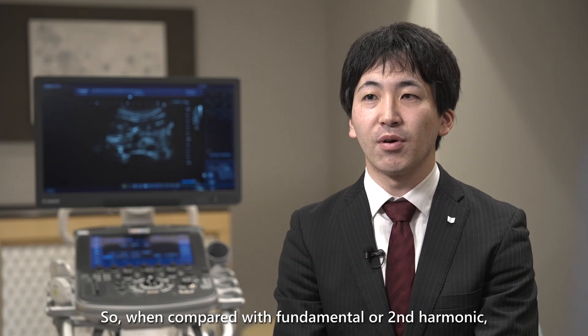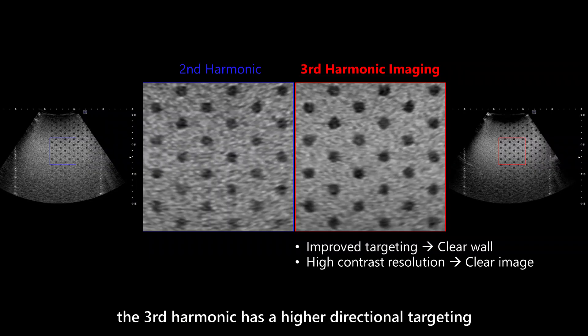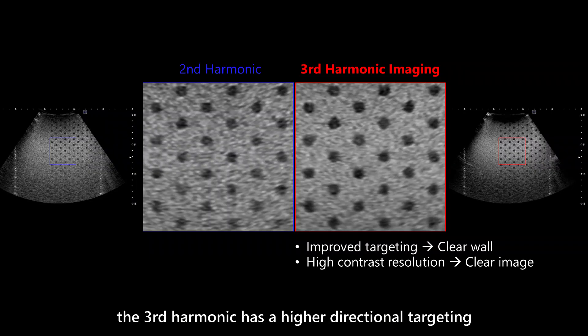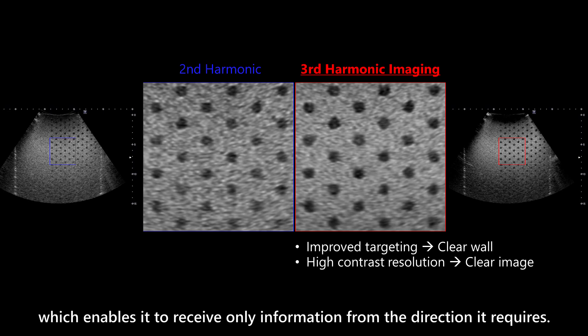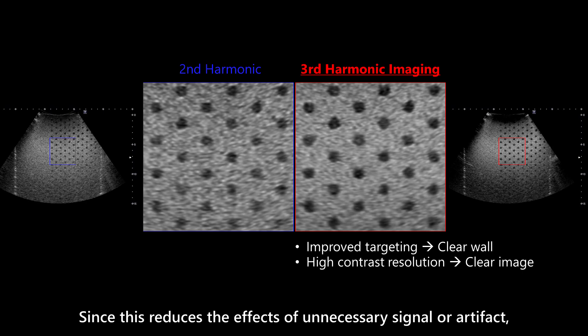When compared with fundamental or second harmonic, the third harmonic has a higher directional targeting, which enables it to receive only information from the direction it requires. Since this reduces the effects of unnecessary signals or artifacts, we are able to visualize the black areas clearly and show more edge detail.